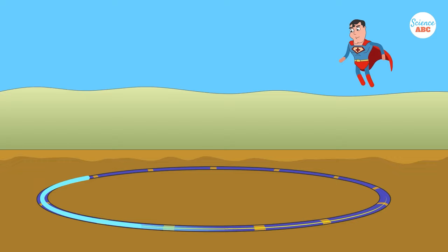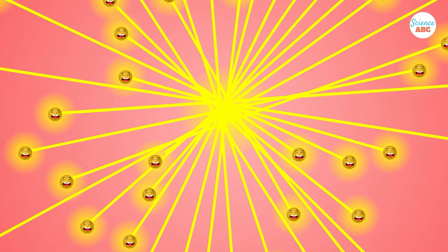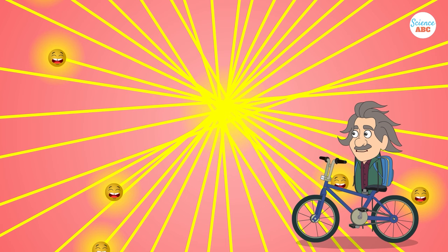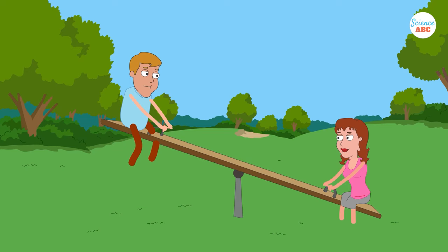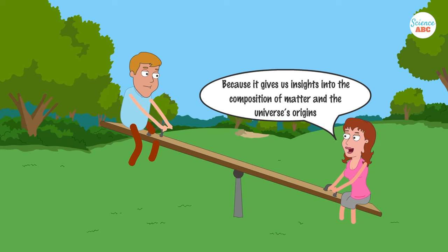This is the highest magnitude of energy reached by the accelerator, and when protons carrying this much energy collide with other protons, the energy of those collisions is transformed into matter, following Einstein's energy-mass equivalence equation, which states that mass and energy are interchangeable, since matter is just a concentrated form of energy. This is why particles like the Higgs boson are produced by these collisions. Studying their properties provides us with insight into the composition of matter and the universe's origins.